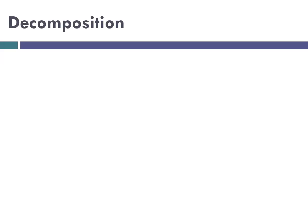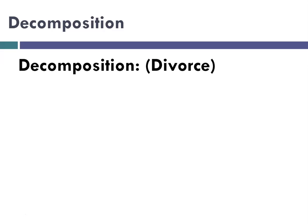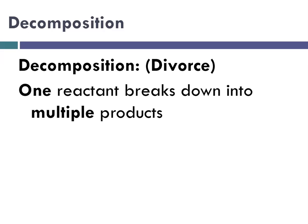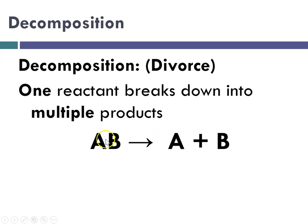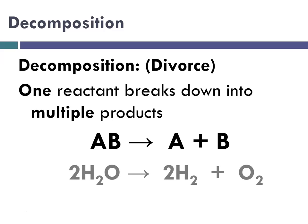The opposite of combination or synthesis would be decomposition, and we can think of that as divorce. One reactant breaks down into multiple products. So the happy couple AB break apart to form A and B separate. My example is two water molecules decompose to produce two molecules of hydrogen and one molecule of oxygen.